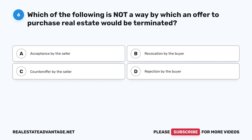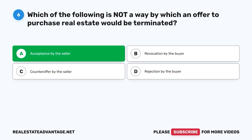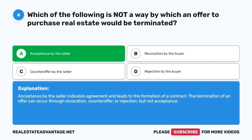Question 6. Which of the following is not a way by which an offer to purchase real estate would be terminated? The correct answer is A. Acceptance by the seller indicates agreement and leads to the formation of a contract. The termination of an offer can occur through revocation, counteroffer, or rejection, but not acceptance.